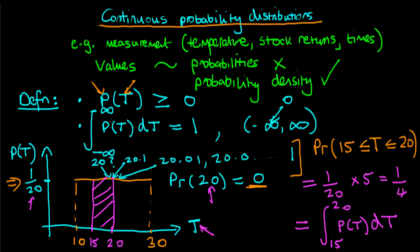The definition of a continuous probability distribution is similar to that of a discrete distribution in that the function's values must be greater than or equal to zero, and we require that the integral of our probability distribution function is equal to one when integrated across all possible values of the variable. Finally, to work out the probability of a particular set, we integrate the probability distribution between the upper and lower bounds of that set.